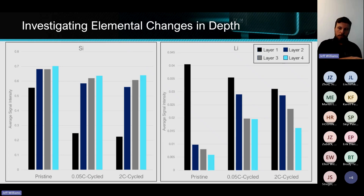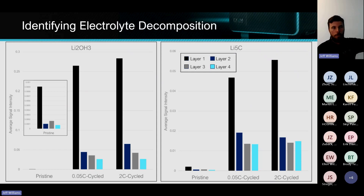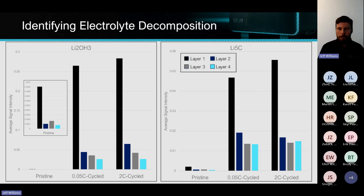Looking at the 0.05C and 2C on the lithium maps — as we go in depth, they more or less follow the same trend. They look kind of the same on average. And if we look at the hydrates and carbides, in the pristine sample there's almost none of these compounds. But all of these compounds are forming during the charging process. If we look at the two cycle difference on average, you might say our 2C performed just as well as our 0.05C. But if we think back to those maps, there's actually a very big morphological difference. Average can sometimes lie to you — you need to look at it in context.